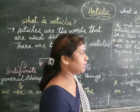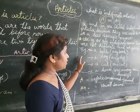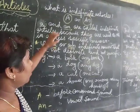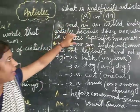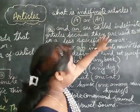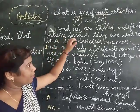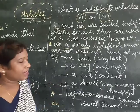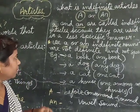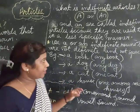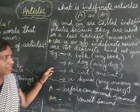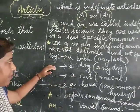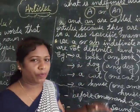Now let us proceed. I am going to explain about the indefinite articles. 'A' and 'an' are called indefinite articles because they are used to refer to something in a less specific manner. Use 'a' or 'an' before indefinite nouns that are not definite and not specific. For example, 'a book' — it could be any book.